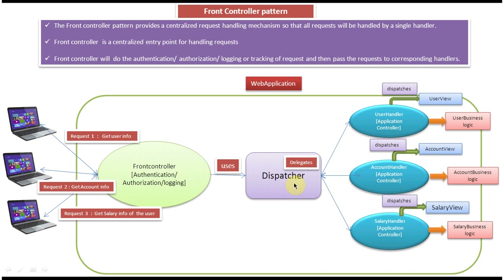Once the get user info request comes to the Dispatcher, the Dispatcher checks the request type. The request is for getting user information, so the Dispatcher identifies which handler among the three can process this get user info request. It determines the User Handler can handle it, so it delegates the request to the User Handler.